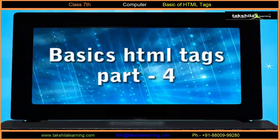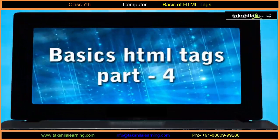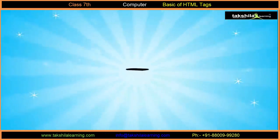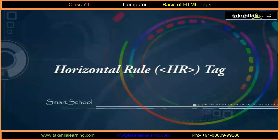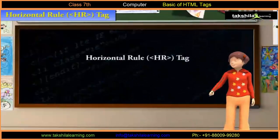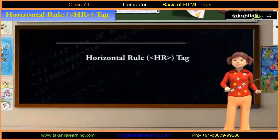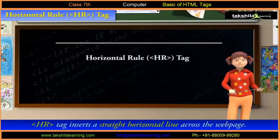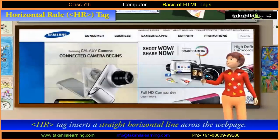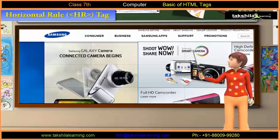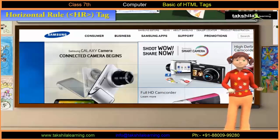Basics HTML Tag Part 4. The HR tag stands for Horizontal Rule. This tag inserts a straight horizontal line across the web page. By default, the horizontal line appears shaded and spans the width of the browser window.